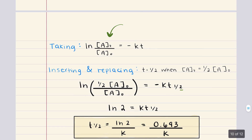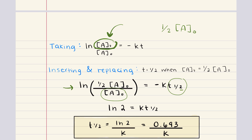Here is our expression for the first-order reaction. The concentration of A at any time t is now replaced with one-half the initial concentration of reactant A. When we insert and replace, we get: the natural logarithm of one-half the initial concentration divided by the initial concentration is equal to negative k multiplied by t one-half. The initial concentration terms cancel, leaving us with the natural log of one-half equal to negative k times t one-half.